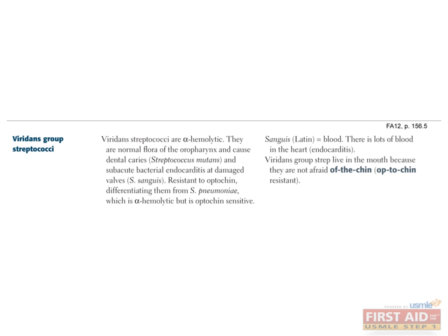Remember, optochin-resistance is what distinguishes viridans strep from strep pneumoniae. A useful mnemonic is that viridans lives in the mouth because it is not afraid of the chin. Viridans is normal flora found in the mouth. A subspecies of viridans strep, streptococcus mutans, is the bacteria in our mouth responsible for tooth cavities. When you eat a lot of sugar, S. mutans can convert that sucrose into lactic acid, creating an acidic environment in your mouth that makes it vulnerable to decay.